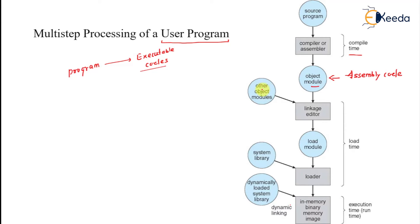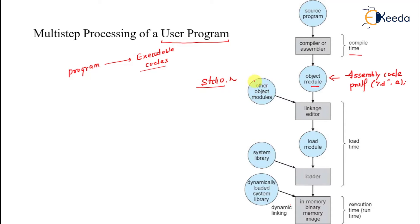Then what this object module does is it takes other object modules and links them together using a linkage editor. For example, your program may have a reference to a printf function — something like printf("%d", a) — but that definition is in the stdio.h file, the standard input/output header file. So we have to bridge the link between both of them, and for that we need a link editor. After that the program is a single source program consisting of all module links together, done by the linkage editor.